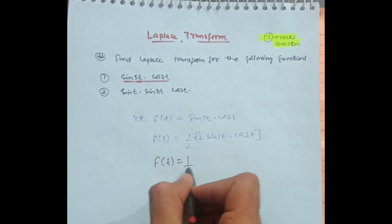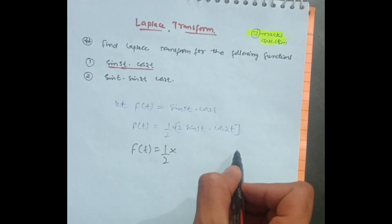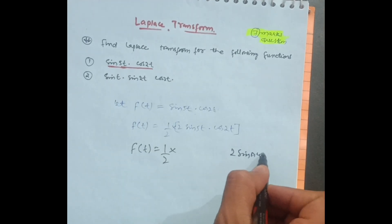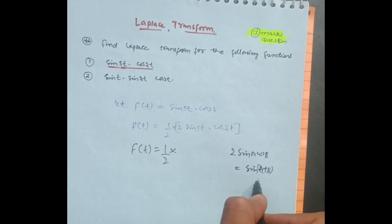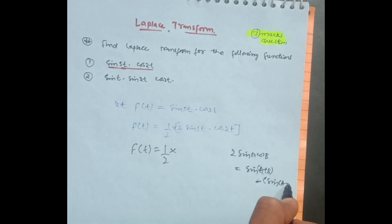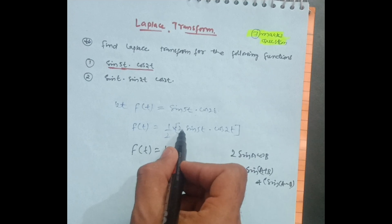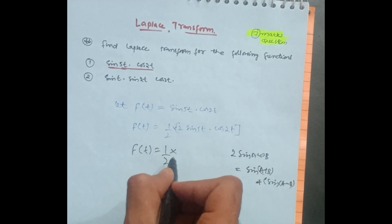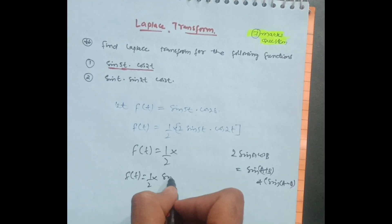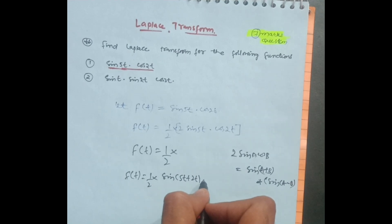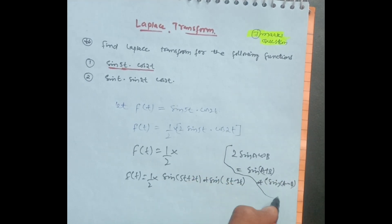So f(t) is equal to 1 upon 2 into this expression. There is a formula you should remember: 2 sin A cos B is equal to sin(A+B) plus sin(A−B). Applying this, 2 times sine of 5t cos of 2t becomes sin(5t + 2t) plus sin(5t − 2t), which gives us f(t) = (1/2) · [sin(7t) + sin(3t)].